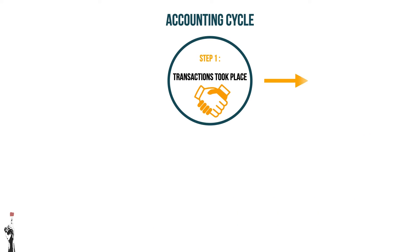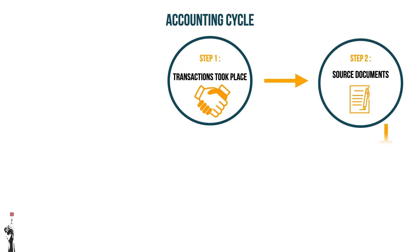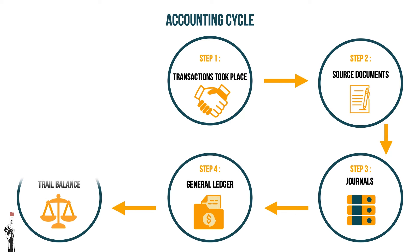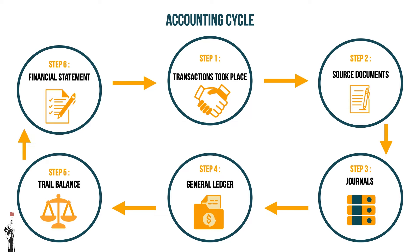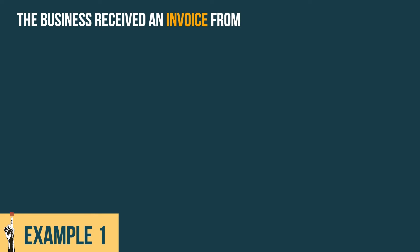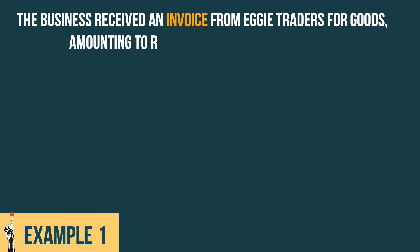So let's take this back to the accounting cycle and look at a few creditor examples and the effect on the accounting equation. Let's look at the first transaction that took place on the first of the month. The business received an invoice from Eggy Traders for goods amounting to 6,000 rand less 10% trade discount.